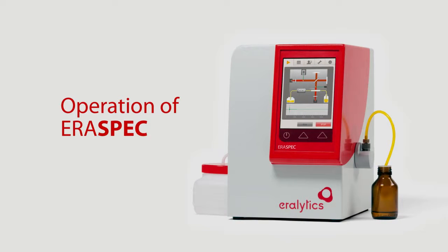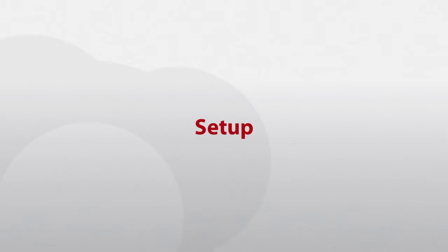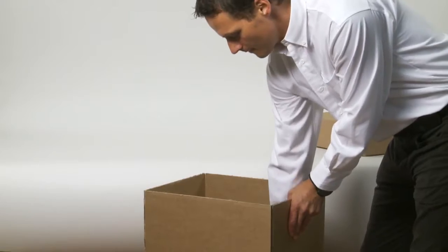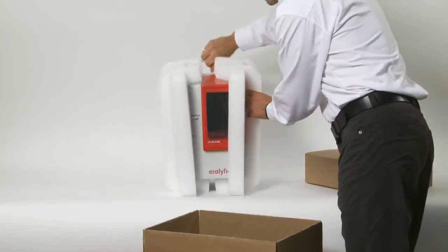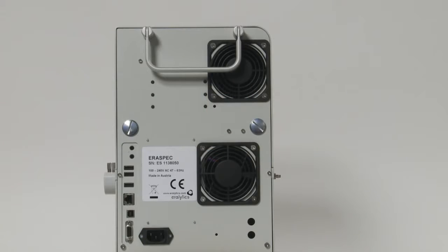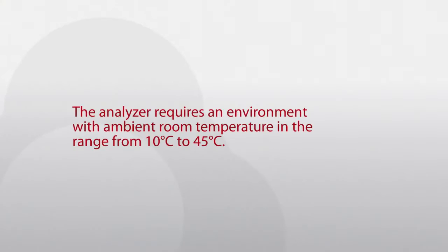Operation of Aerospec setup: After unpacking, place the instrument on a stable benchtop. Make sure that the vent holes of the analyzer are not obstructed. The analyzer requires an environment with ambient room temperature in the range from 10 to 45 degrees Celsius.